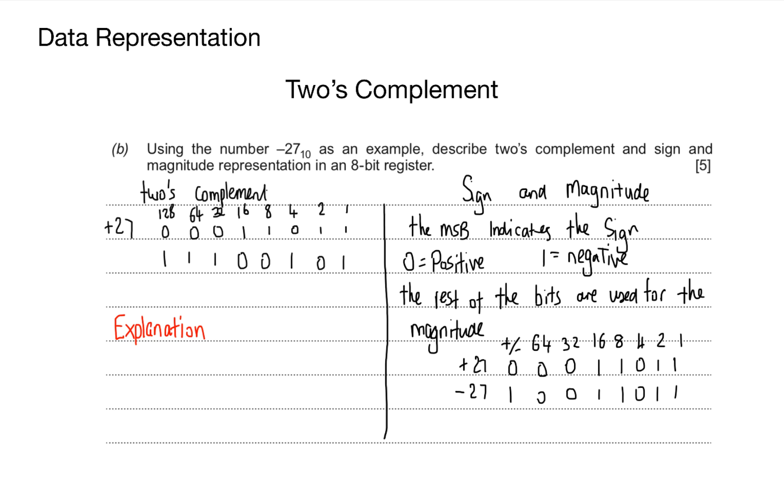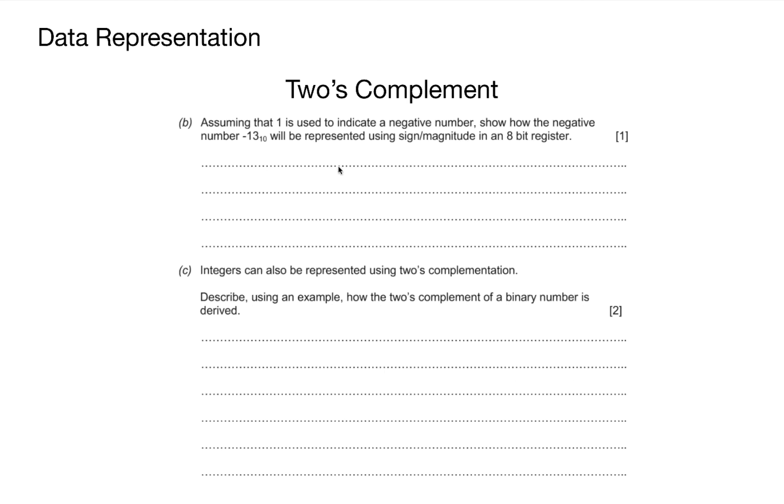That's worth 5 marks, which you'll probably agree, in an exam setting, is a win-win situation. One more example, and then we'll call it quits. In this question, it says, assuming that 1 is used to indicate a negative number...